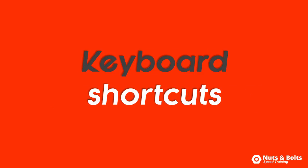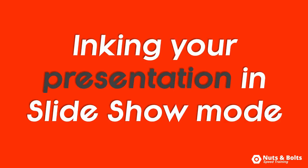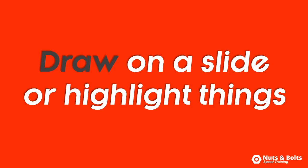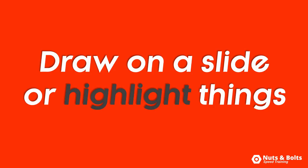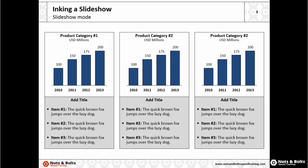This is Nuts & Bolts Speedchain with your keyboard shortcuts for inking your presentation in slideshow mode, which is useful when you want to draw on your slides or highlight things during your presentation. Here in PowerPoint, I'll hit Shift-F5 for presentation mode, and you can see my mouse cursor there on my screen.